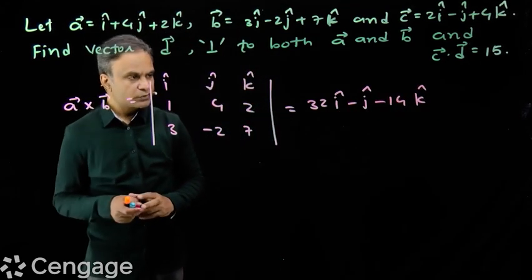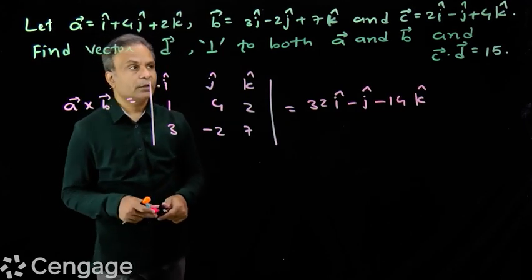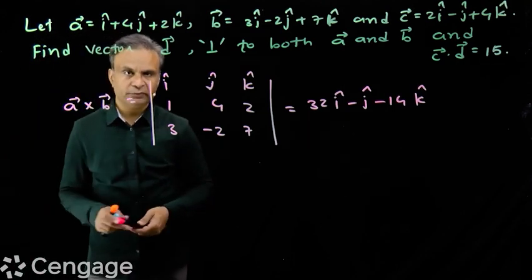Okay, so this is vector perpendicular to vectors a and b. Now, d is also perpendicular to a and b.